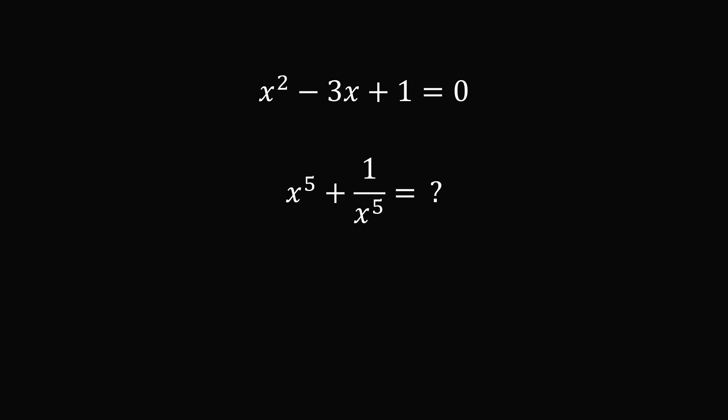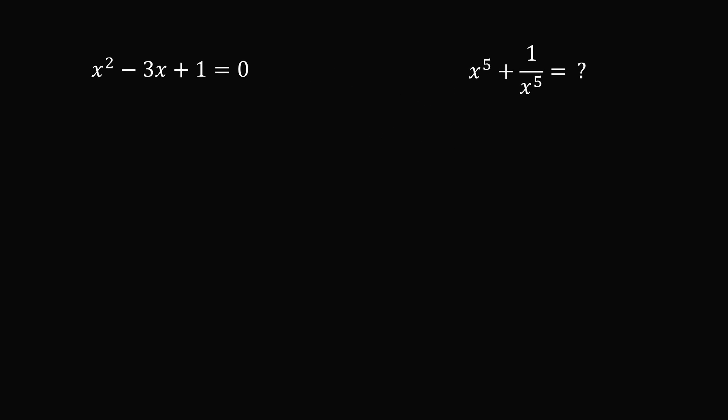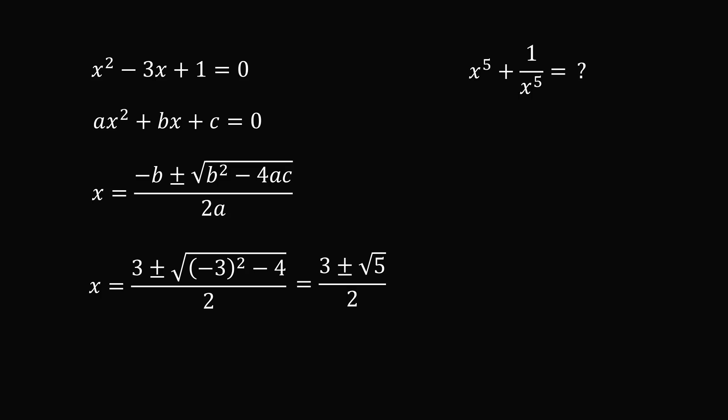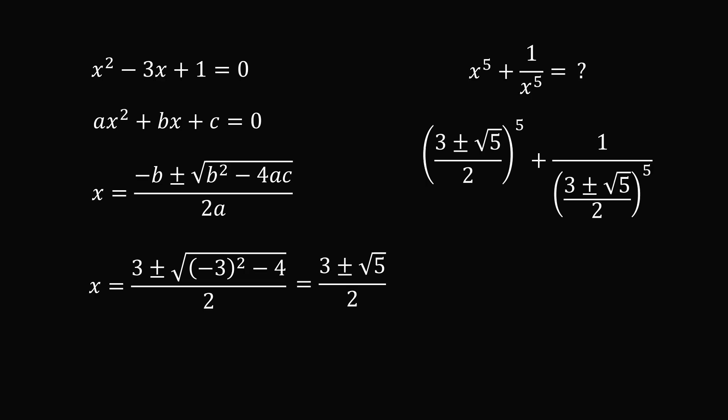Let's focus on the known quadratic equation. My first instinct, and perhaps your first instinct, would be to solve for the value of x directly. So if we have a general quadratic equation, ax squared plus bx plus c is equal to 0, we know the values of a, b, and c: a is equal to 1, b is equal to minus 3, and c is equal to 1. So we can use the quadratic formula — x is equal to the opposite of b, plus or minus the square root of b squared minus 4ac, all over 2a — and we get that x is equal to 3 plus or minus root 5, all over 2. But now we need to calculate x to the power of 5 plus 1 over x to the power of 5. This doesn't seem like a very easy calculation. We need to take 3 plus or minus root 5 and raise that to the power of 5. This is not impossible, but it would be a tedious calculation.